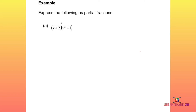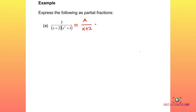Let's work the first example: express 3 over (x + 2)(x² + 1) as partial fractions. Check the denominator factors — the first factor (x + 2) is linear, so the numerator is constant: A over (x + 2). The second factor (x² + 1) is quadratic and cannot be factorized, so the numerator will be linear: Bx + C over (x² + 1).